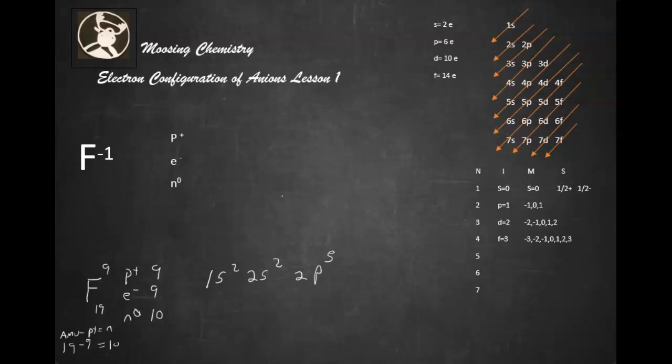But what about F minus 1? Alright, well the atomic number is still 9, and the atomic mass number is still 19. So we have 9 protons, and of course, remember that we do the AMU minus the number of protons to give us the neutrons.